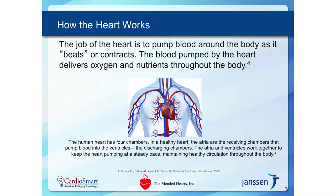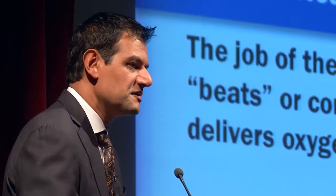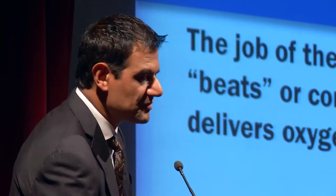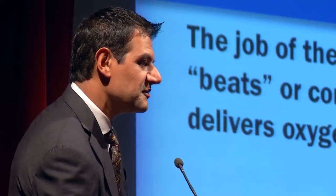The heart accomplishes its job as a pump by passing blood through multiple chambers, controlled by valves. We have a left and a right side: one side pumps blood to the lungs, and the left side pumps blood to the rest of the body. There are four chambers — two lower chambers called ventricles, which are the actual pumps, and two upper chambers called atria.